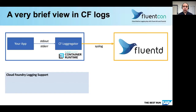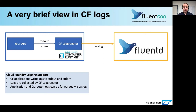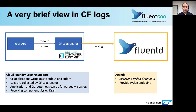Let's have a short look at how logging in Cloud Foundry works. An application can write its logs to standard out and standard error. Those logs are collected by the Cloud Foundry Loggregator system running in the container runtime. It can forward the application logs as well as the access logs coming from the Go router via syslog. Any component that receives such a syslog stream is called a syslog drain.